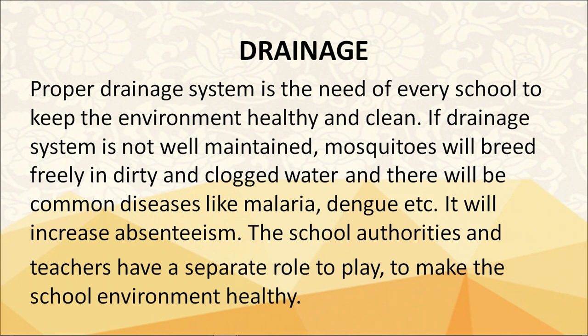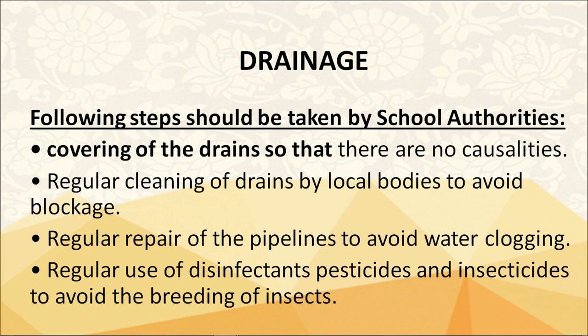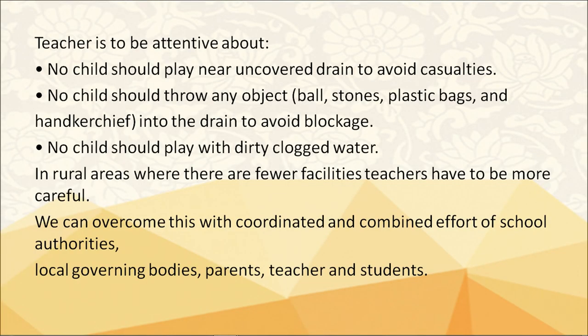School authorities and teachers have roles to play in maintaining a healthy environment. Steps to be taken by school authorities include: covering drains to avoid casualties, regular cleaning of drains by local bodies to avoid blockage, regular repair of pipelines to avoid water clogging, and regular use of disinfectants, pesticides and insecticides to avoid breeding of insects. Teachers should ensure no child plays near uncovered drains, and no child throws objects like balls, stones, plastic bags or handkerchiefs into drains.